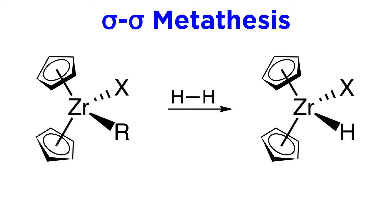Here is a concrete example of sigma-sigma metathesis. We have a zirconium center with two Cp ligands, an alkyl ligand and a halogen. This can react with molecular hydrogen. So one of these hydrogen atoms will end up coordinated to the metal, and the other will end up coordinated to the alkyl group, while the metal carbon bond will break, leaving us with a hydride ligand and an alkane. So the M-R and H-H sigma bonds broke, and we got new M-H and C-H sigma bonds.